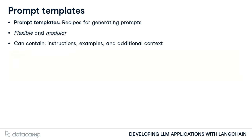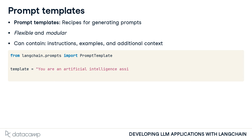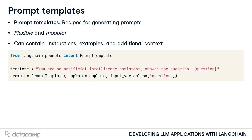PromptTemplates are created using LangChain's PromptTemplate class. We start by creating a template string, which is structured to prompt the AI to answer a question. The Question field is defined for dynamic insertion later in the code. To convert this string into a PromptTemplate for our model, we pass it to the PromptTemplate, specifying any variables representing inputs using the input_variables argument.